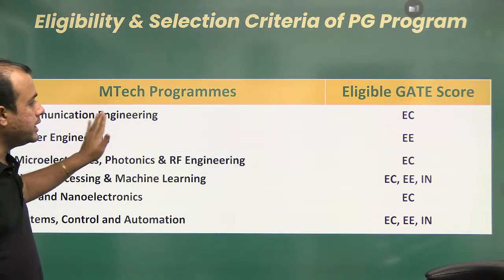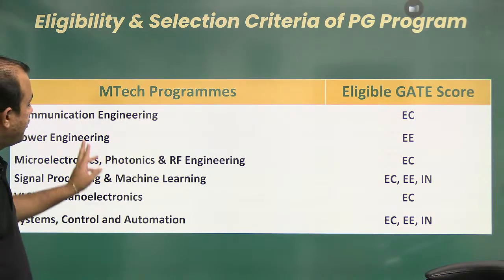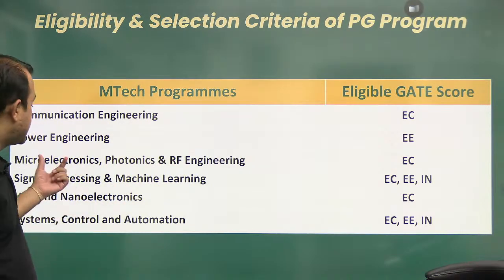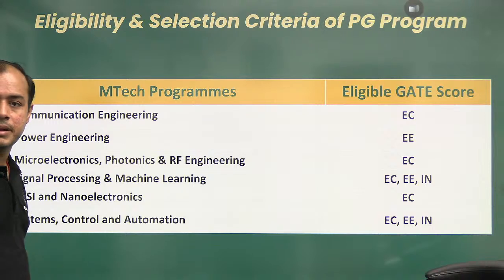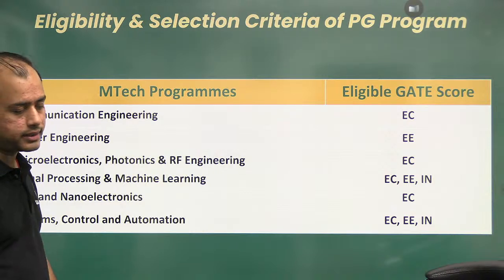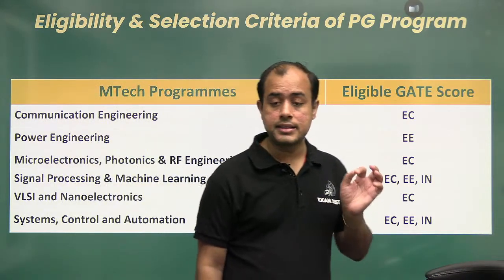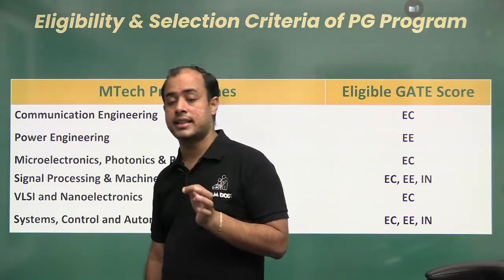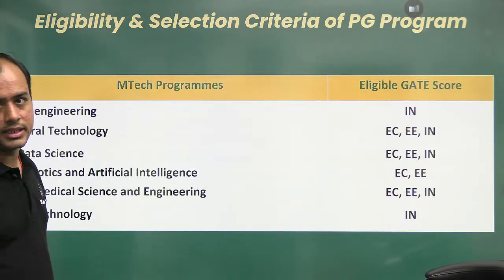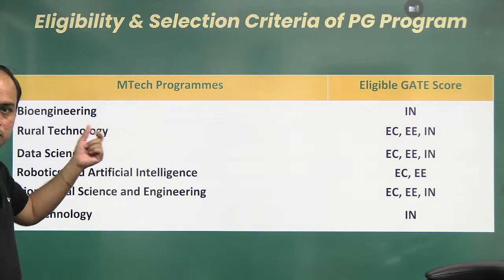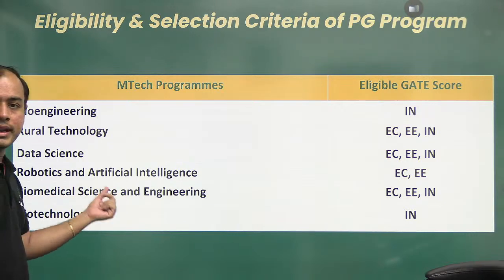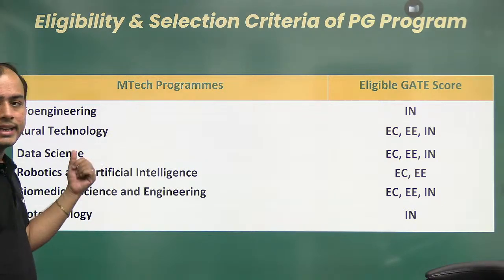For Communication Engineering, EC is eligible. For Power Engineering, Electrical and EC are available. For Microelectronics, only EC is eligible. For Signal Processing, all three branches are eligible. For VLSI, only EC is eligible. For System Control and Automation, all three branches. For Biomedical, all three branches. For Robotics and AI, Electrical and EC. For Biotech, only Instrumentation.